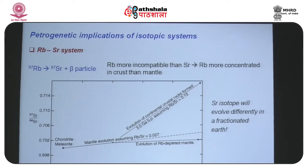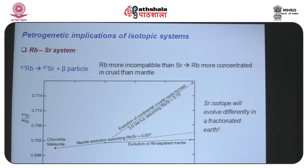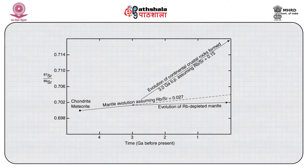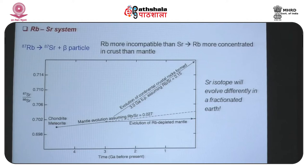To understand the petrogenetic implications better, we look specifically at the rubidium-strontium system and how strontium isotopes have evolved through time. We can calculate the 87Sr/86Sr ratio of the bulk earth at the time of its formation around 4.6 billion years ago from chondritic meteorites, which represent the bulk unfractionated earth composition. From that time onwards, 87Rb has been constantly decaying to 87Sr, so the 87Sr/86Sr ratio has been constantly increasing along a line — it should have continued along a dotted line to the present day, but this is not the case.